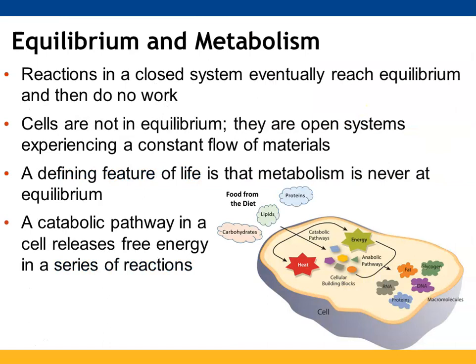In a closed system you will eventually reach equilibrium where the rate of reactions moving from reactants to products and the rate going backwards will be equal. Cells aren't like that because we always have materials coming in and leaving. Metabolism is never at equilibrium because you have catabolic pathways that give free energy and anabolic pathways that consume it, getting materials to where they need to be.